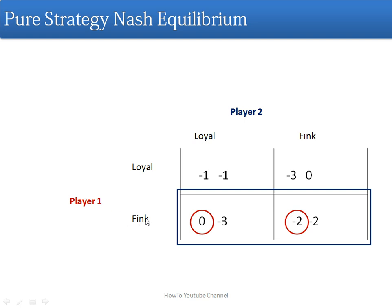Now if player 1 is going for fink, player 2 needs to see which strategy gets him a higher payoff. For loyal, player 2 will get minus 3. For fink, player 2 will get minus 2. So minus 2 is greater than minus 3, so minus 2 is selected.